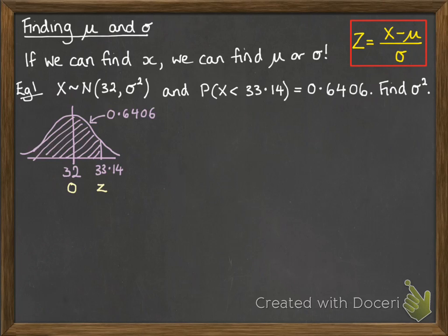Now if we translate that into a z-curve, it would have a mean of 0, and that 33.14 would be the z-value equivalent on the z-curve. So we would be looking at phi of z being 0.6406, so reading backwards off our table, z would have to be 0.36.